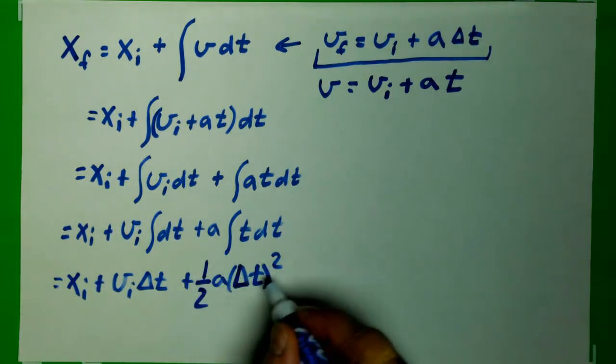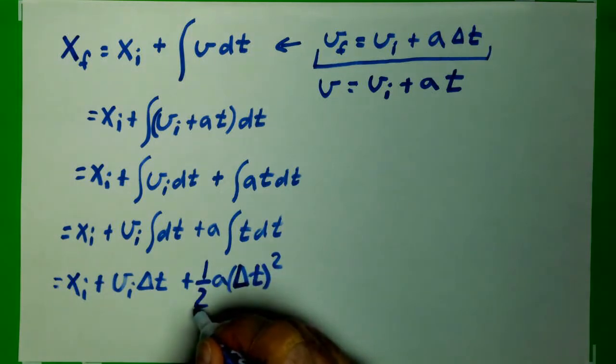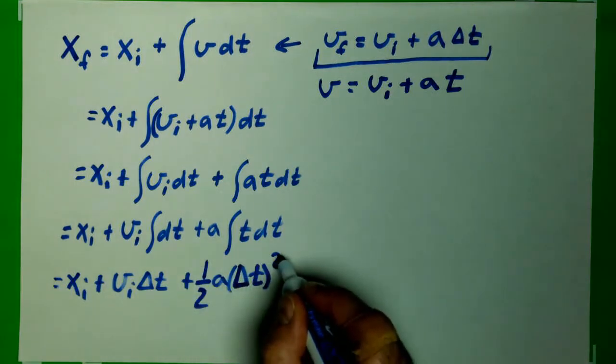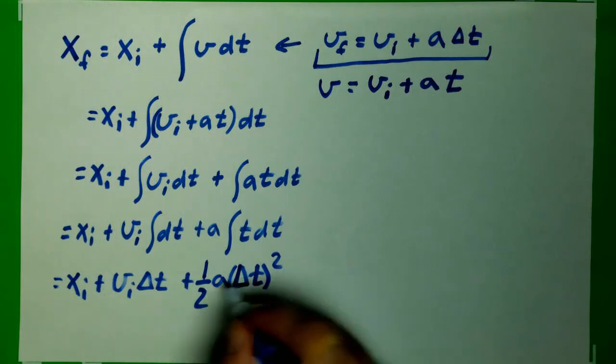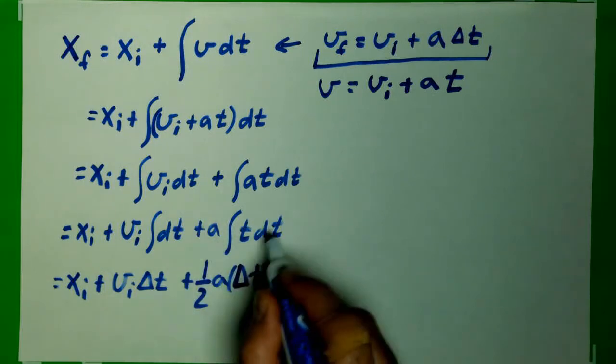So again, to check, the 2 comes down, cancels this 2, and I have a t to the first power. So I end up with this, what I had in the integral.